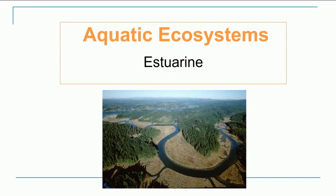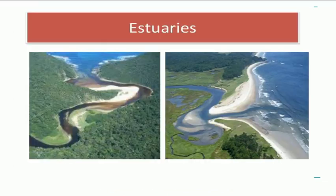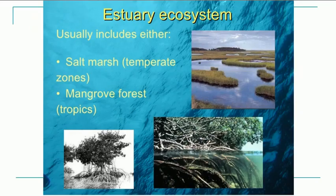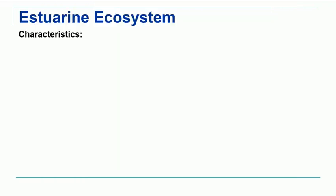We now move to the second part of today's discussion — the estuarine ecosystem. An estuary is the area where the river meets with the sea. It involves different types of environments like salt marsh and mangrove forest.